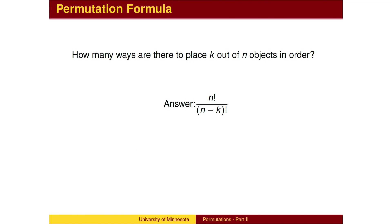This can be generalized. Begin by placing all n in order — this is the n factorial in the numerator. We placed k in order, and need to remove the remaining n minus k from the calculation.